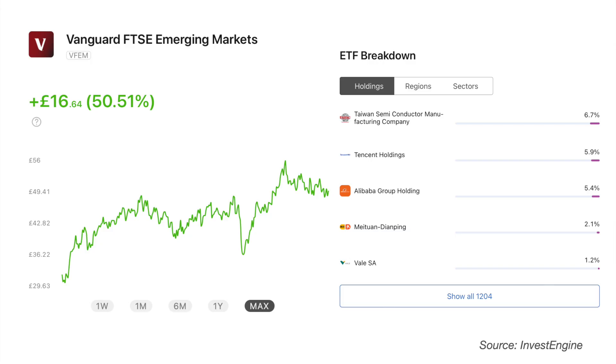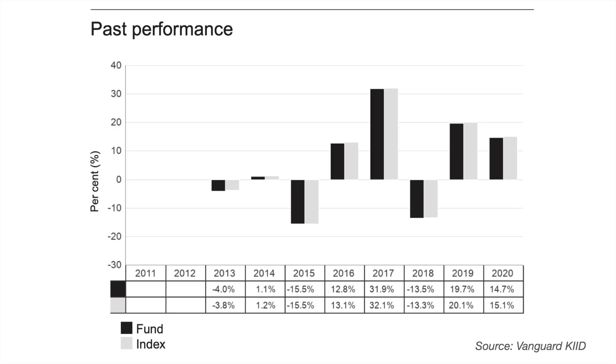The last of the equity ETFs common to both InvestEngine and Vanguard is the Vanguard FTSE Emerging Markets ETF, which has an ongoing charge of 0.22%. The distributing version is identified by VFEM and the accumulating version by VFEG, which is also available on InvestEngine but not on the Vanguard platform UK. These ETFs are of higher risk because the investment focus is in emerging markets, and those economies are typically more volatile than the developed world. Whilst there have been some strong years in past performance, there have also been large downsides. Having a small allocation to emerging markets can help to add a bit of spice to your portfolio.